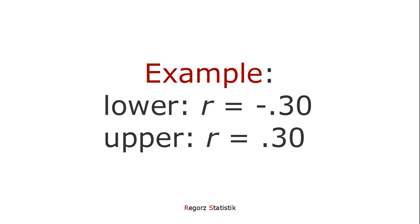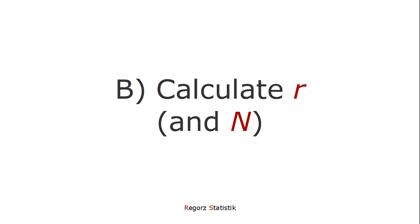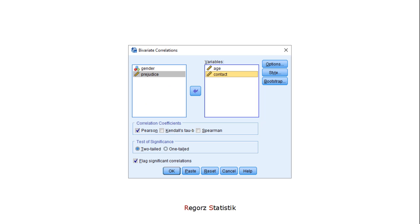For our example, let's assume that we set boundaries at minus 0.3 and plus 0.3 for our correlation. Then we calculate R. And we do that with the ordinary correlations command.